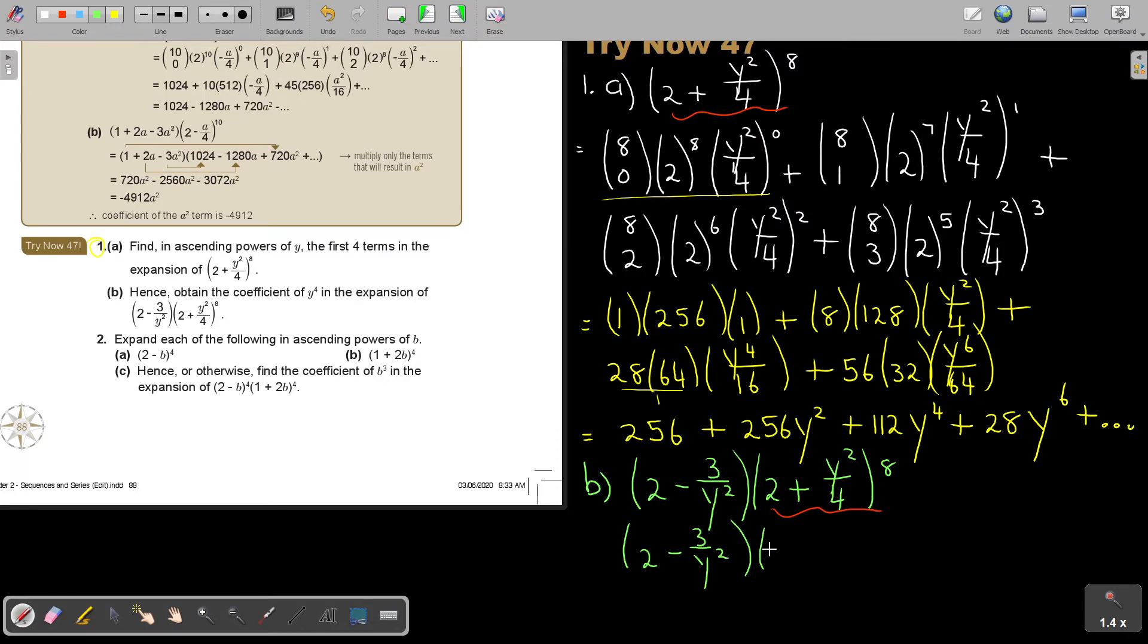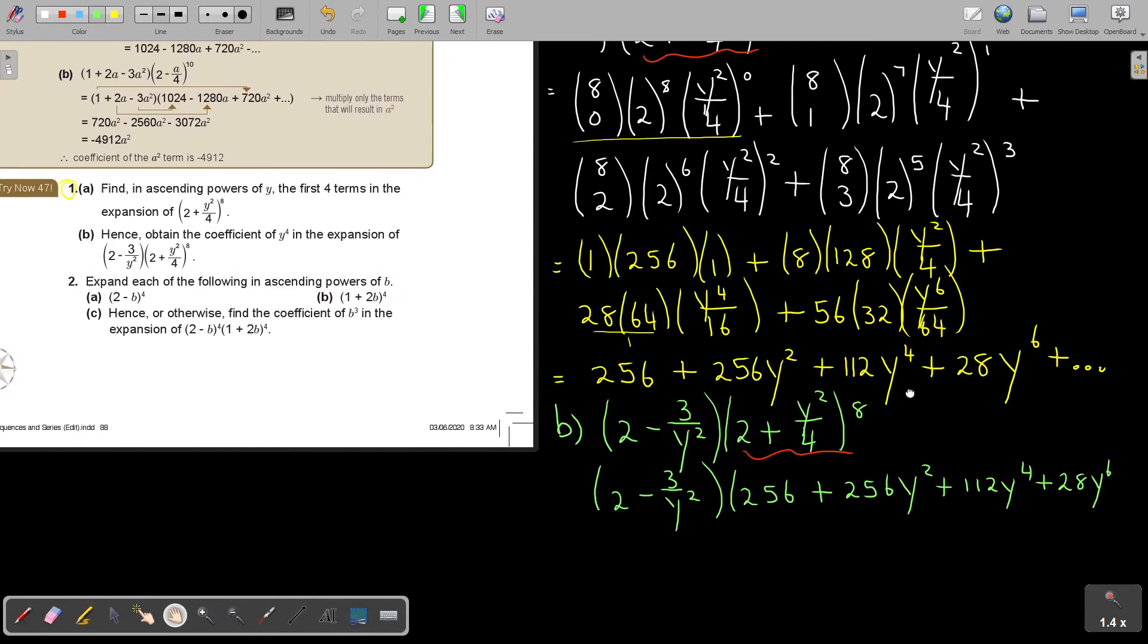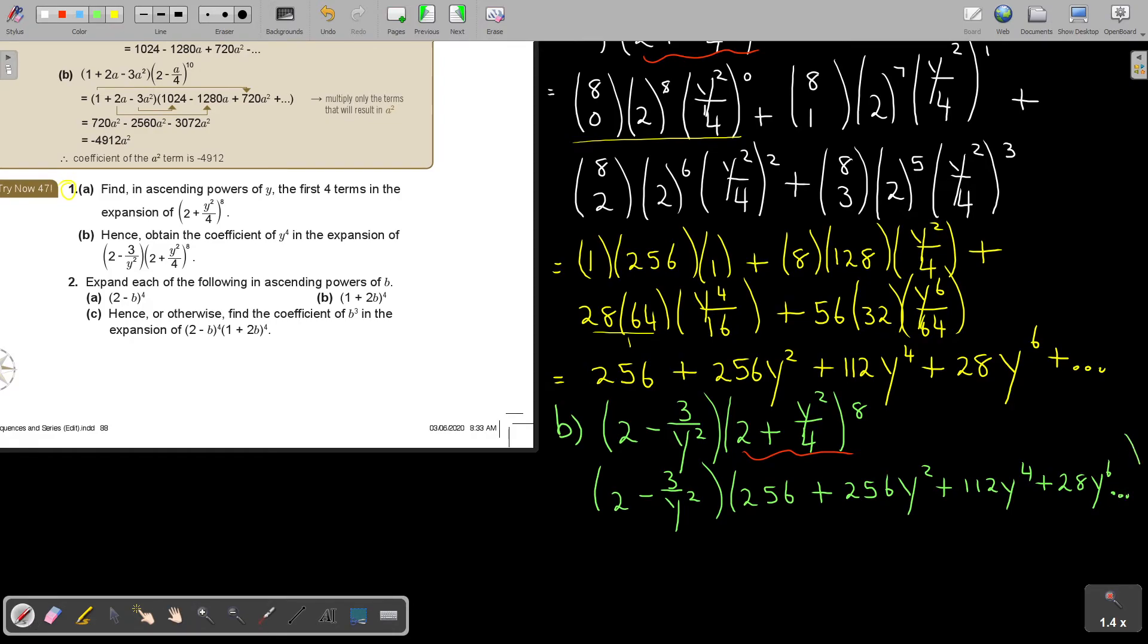And write your first four terms. 256 plus 256 y squared plus 112 y to the power 4, and the fourth one 28 y to the power of 6. You can make the three dots, it's going on. Now just be careful. They said it's y to the power of 4. Now every time I multiply it, I must think where will I get y to the power of 4. But because I'm having a division there, keep that in mind. But let's start with the first one. If I multiply it with the y, let's just make arrows. If I multiply it there, that will be the only time it's y to the power of 4.